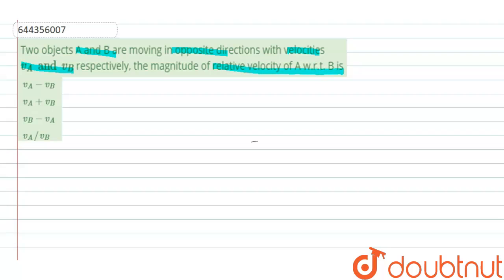Now we have four options. Let us consider there is one object moving in this direction like this. That is positive x direction with velocity VA.